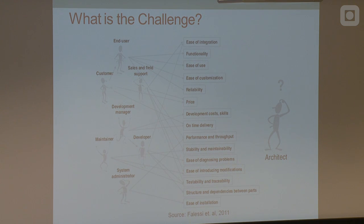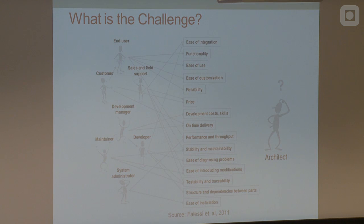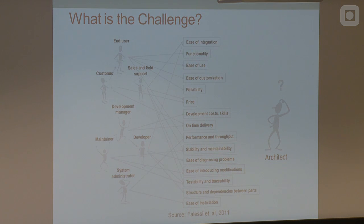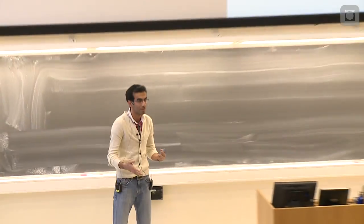Each stakeholder has different requirements. For project management the cost is important. For the architect, maintainability is important. For the system administrator, usability is important. So for each of these different people, some aspects are more important. The problem is when the requirements are conflicting — you have a solution where security is better but performance is really bad. For one person security is the priority and for another it is performance. You must converge all of these to one solution, and that makes this process hard.